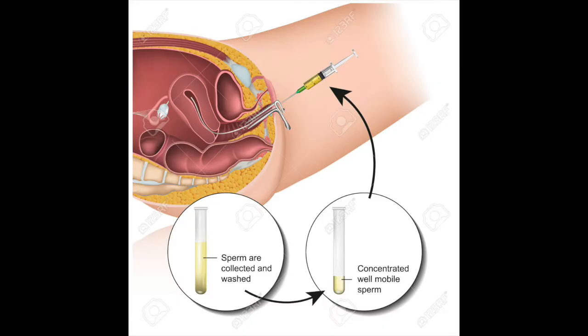Along with antioxidants and lifestyle modification in mild oligospermia, we advise patients to undergo an intrauterine insemination or IUI, where the sperms are washed, centrifuged, and the good motile sperms are then injected into the uterus of the female partner so as to increase the chance of fertilization and pregnancy.